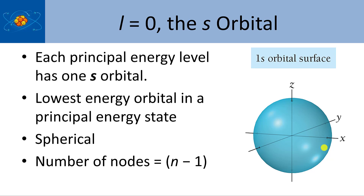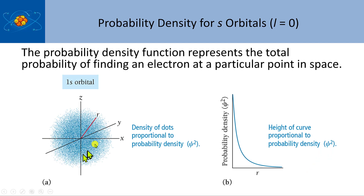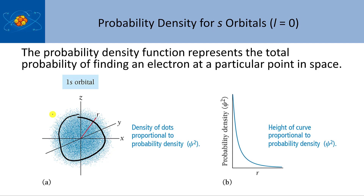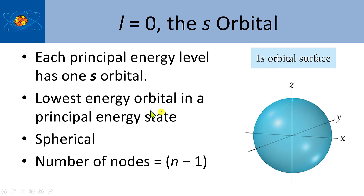Another view is to use a solid surface to designate the shape of the orbital. What we have to do is take this surface and say, where would I find 90% of the points? When you do that, you're not going to include all the points on the sphere. So if you're inside there, that's where you'll find the electron. This would look like a solid sphere. The number of nodes in it is zero — this is the 1s orbital.